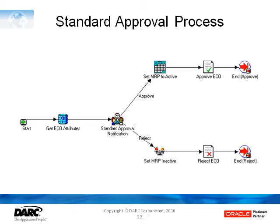This is the seeded standard approval process that Oracle delivers, and it starts with the Get ECO Attributes function, which retrieves the fields off the ECO header for use in the workflow. Then we have the Standard Approval notification, which sends out a notification to everyone on the approval list — that was specified in the ECO header.